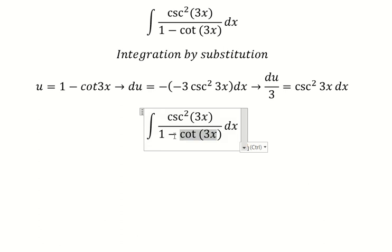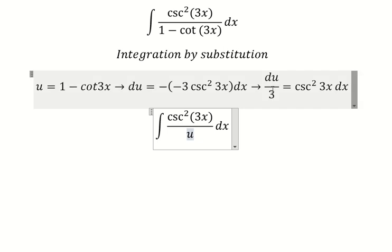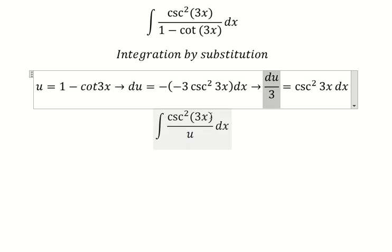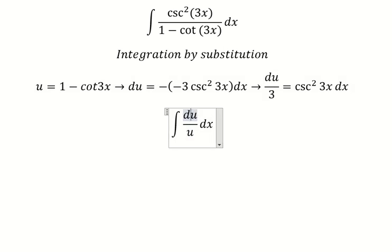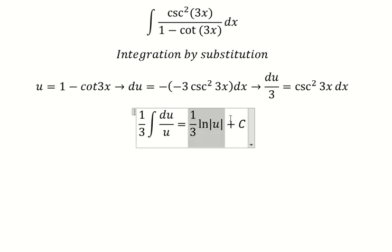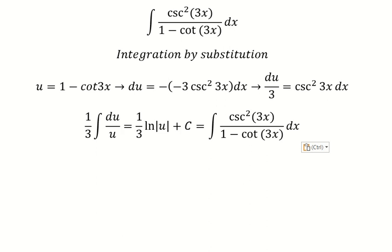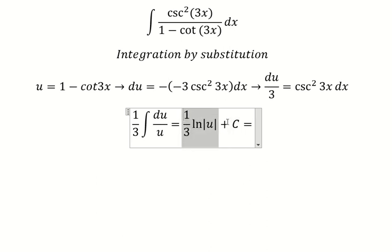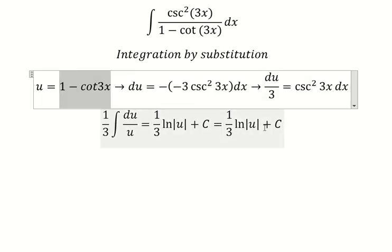We change this to du - we get du/3 equals csc²(3x) dx. Now we have the integral (1/3) times the integral of du/u, which equals (1/3)ln|u| + C. This is the final answer.